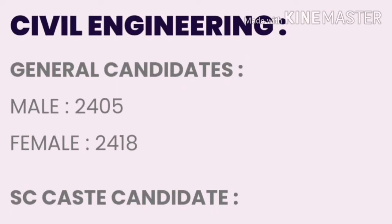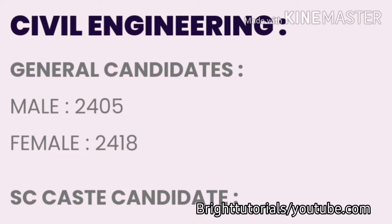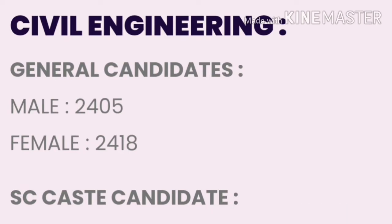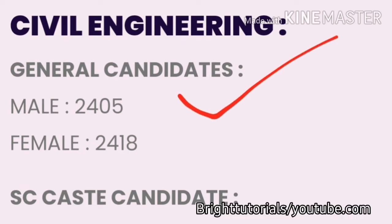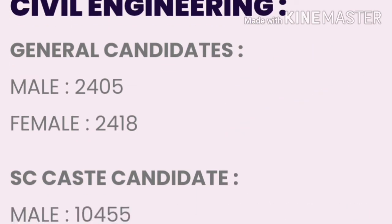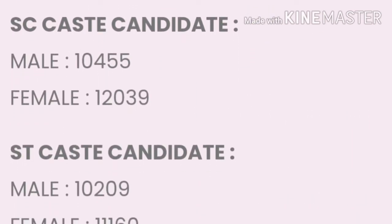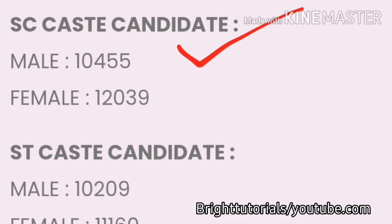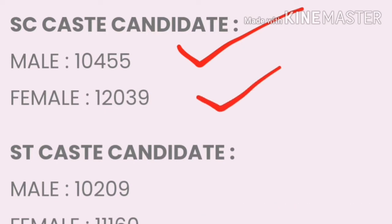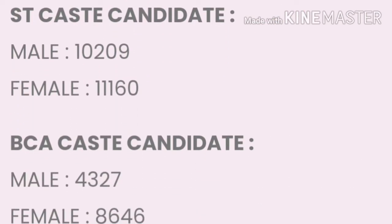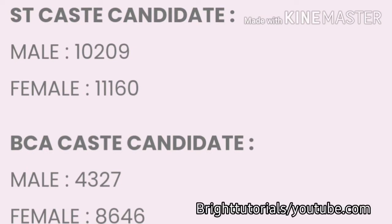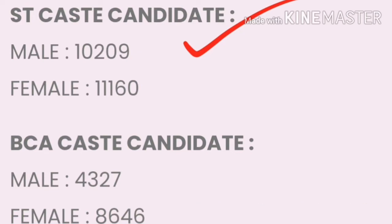Now we will start with Civil Engineering. The cutoff for general candidates in Civil Engineering is: male 2445 and female 2418. For SC caste: male cutoff is 10445 and female cutoff is 12039. For ST caste: male cutoff is 10209 and female cutoff is 11160.